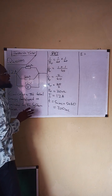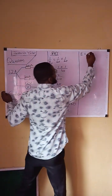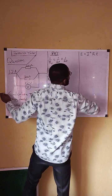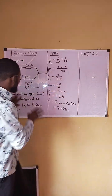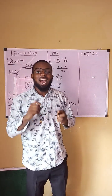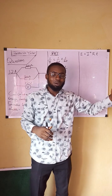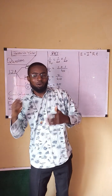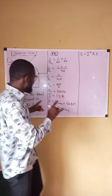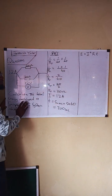We are looking for the total energy developed, so we need to select the required equation that suits the given parameters. The required equation is: Energy = I² × R × t. This comes from our previous class under 'Work Done and Power in an Electrical Circuit,' where we have equations for both work done and power. You choose the equation that relates to what the question requires.